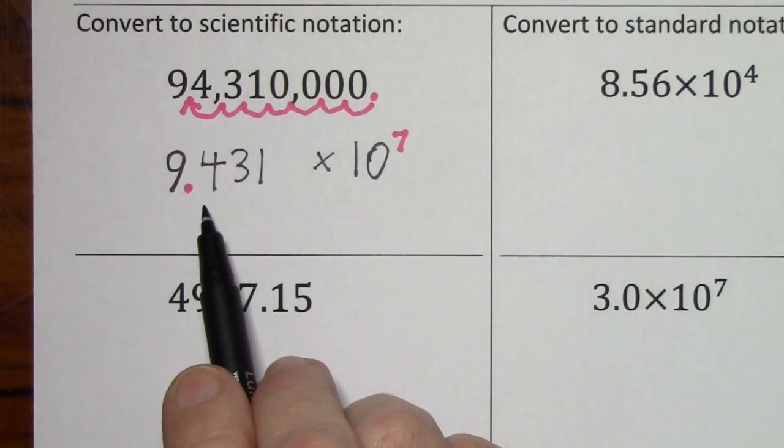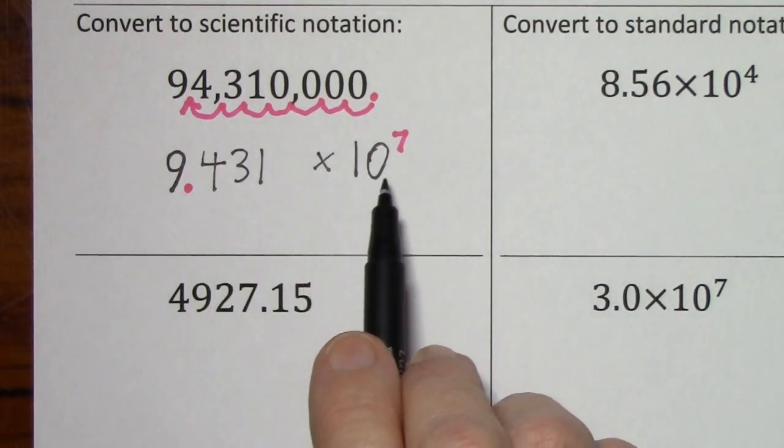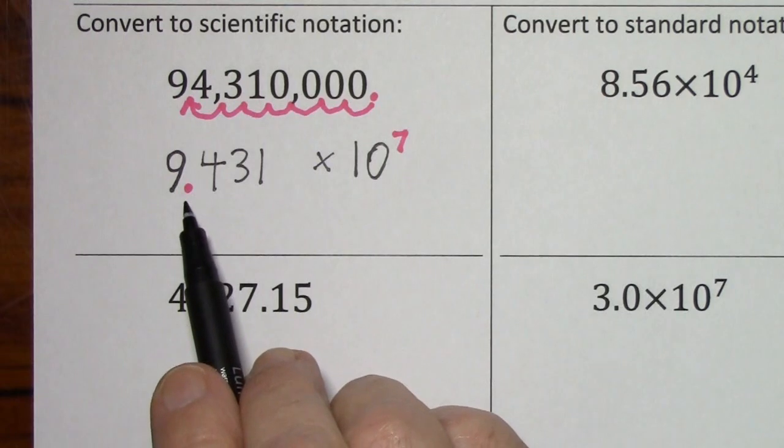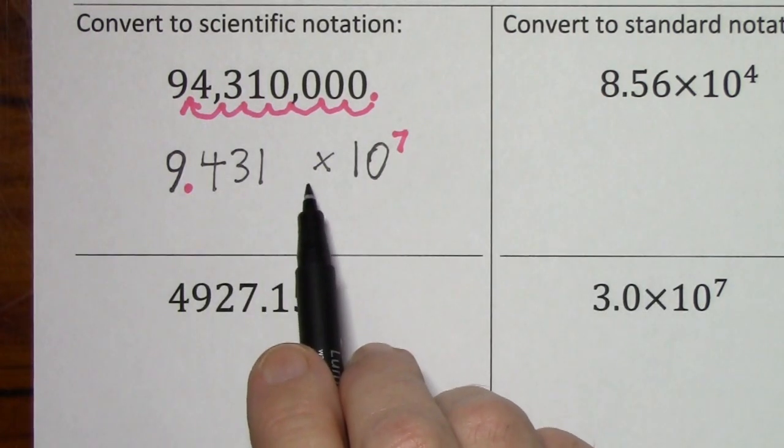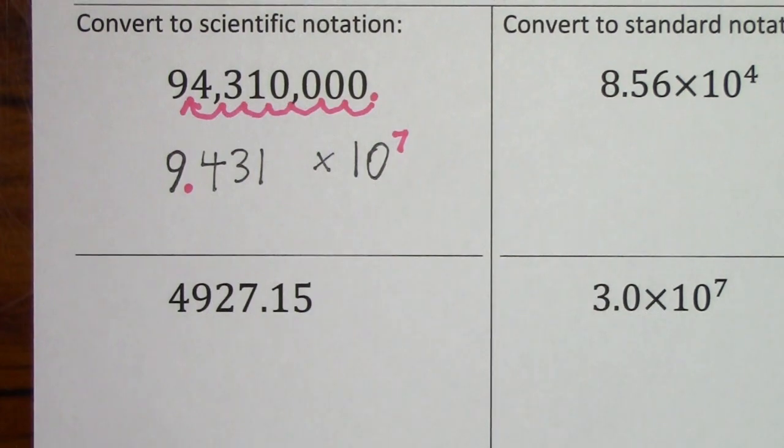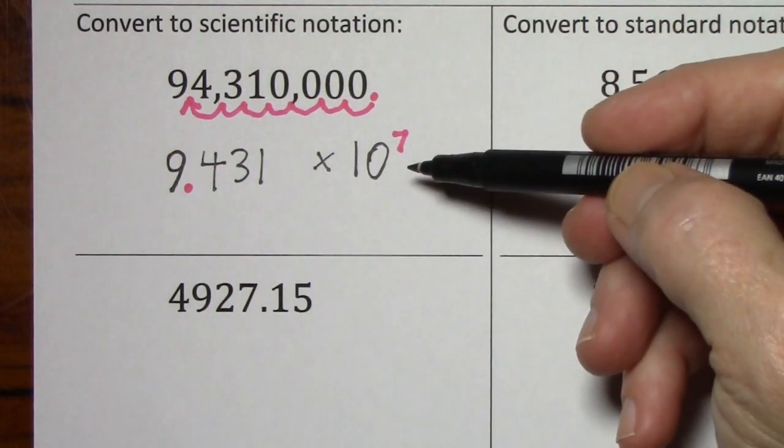Obviously, if I took this number and multiplied it by 10 to the seventh, I would move the decimal seven places, and I would have to put in zeros to hold these empty places. So I've preserved the value.